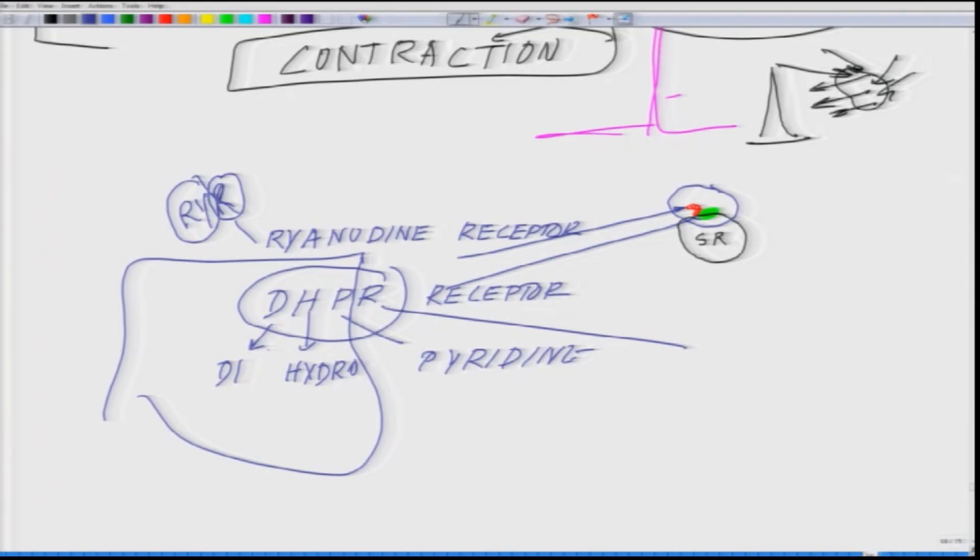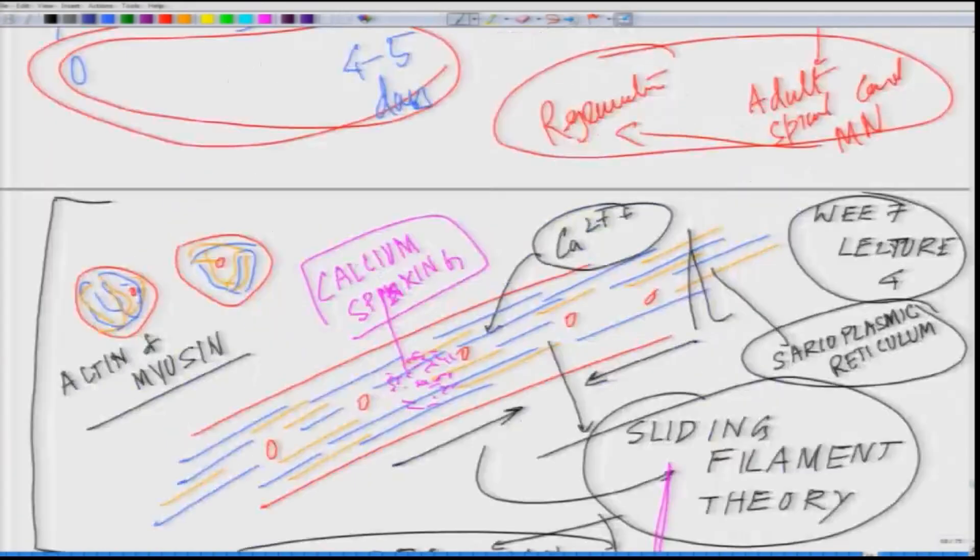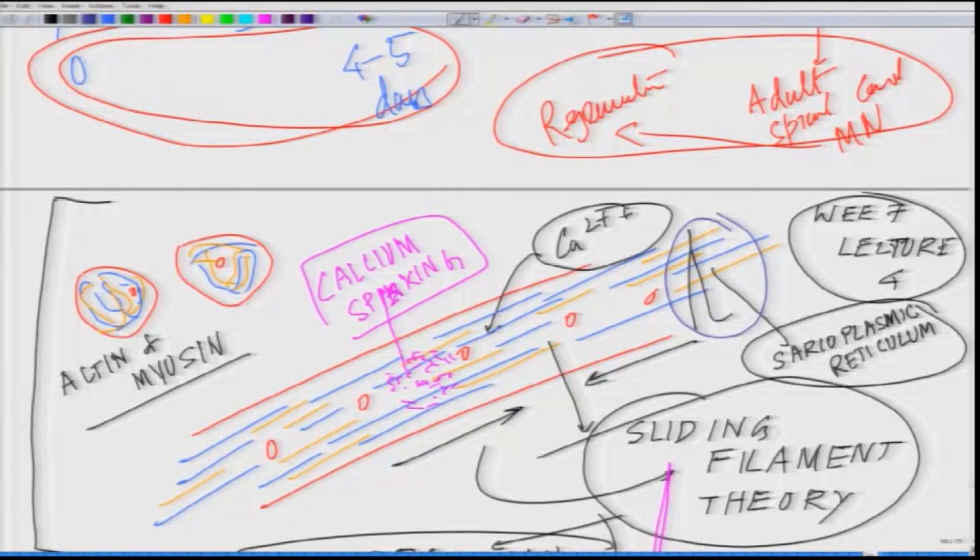These two receptors, these two calcium sensors, help it to throw out calcium and pull it back. This is how the calcium dynamics works, in tandem with this spike and the sarcoplasmic reticulum.